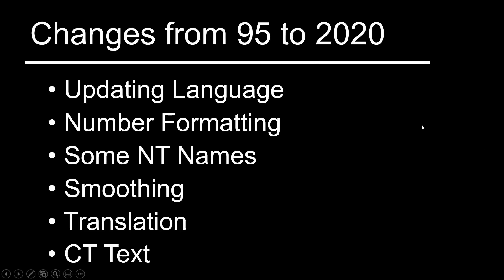Let's talk about the changes from the 95 to the 2020. These are ones I've noted — not super scientific, but it gives you an idea of the kinds of changes you'll see. You'll see updated language, some changes in number formatting, some of those New Testament names changed, some smoothing out of the wording, some translation updates, and also how they handle the critical text versus the Textus Receptus.